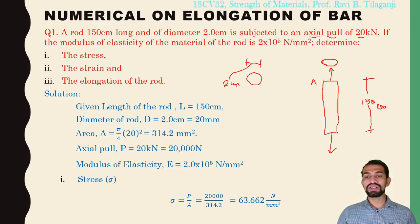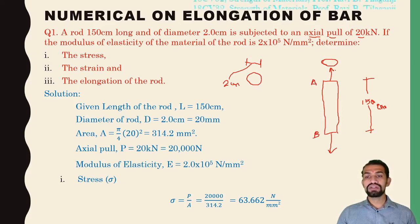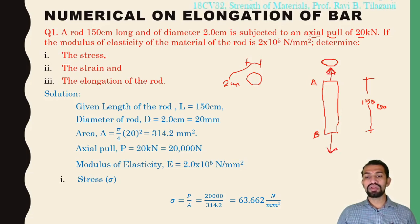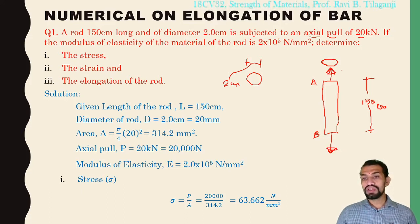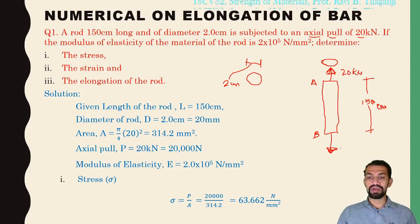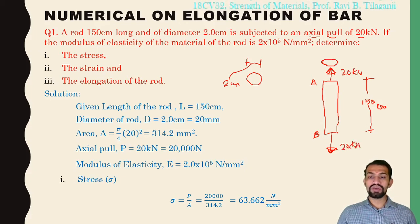We can consider this end as point A and the other end as point B. The force — whatever pull is acting — acts in both opposite directions. So this load is 20 kilo Newtons, as given in the question.